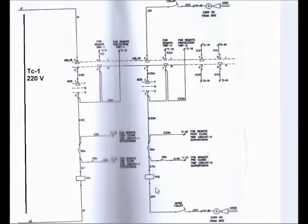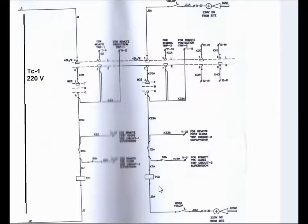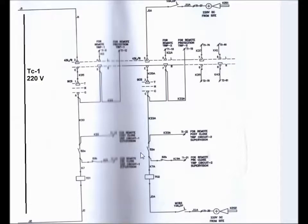Similarly for TC2, that is trip coil 2: for local operation, the local-remote selector switch must be in local position. If we give the tripping pulse, trip coil 2 will energize and the breaker will trip. For remote operation and for protection trip to TC2, this is the path through the trip coil 2.